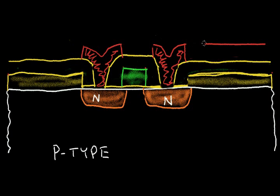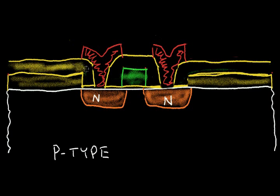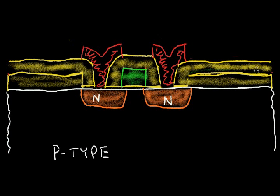I'm not showing all the steps — I just want to give an overview of how the processing works. The glass here is an insulating material, so the gate is insulated from the metal. I've now formed an N-channel transistor. The metal connects to the source region, metal connects to the drain region, and there may be metal in the third dimension connected to the gate, though that's not shown in this particular cross section.